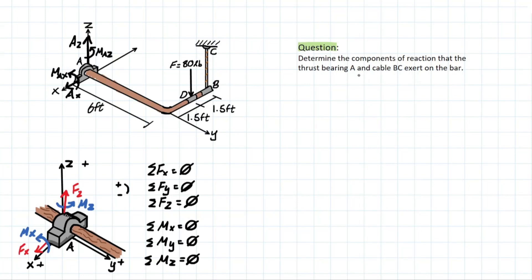Okay, so now we can actually get into the question. Determine the components of reaction that the thrust bearing A and cable BC exert on the bar. So the only thing we haven't talked about yet in this problem is this BC, which is simply going to be a reaction in the upward z direction because this cable is supporting this member, right? So we're going to have FBC here.